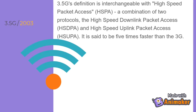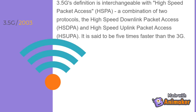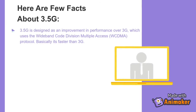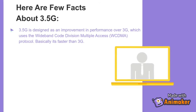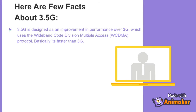3.5G's definition is interchangeable with High-Speed Packet Access (HSPA), a combination of two protocols: High-Speed Downlink Packet Access and High-Speed Uplink Packet Access. It is said to be five times faster than 3G. 3.5G is designed as an improvement in performance over 3G, which uses the Wideband Code Division Multiple Access (WCDMA) protocol.